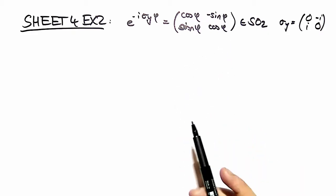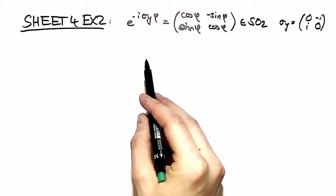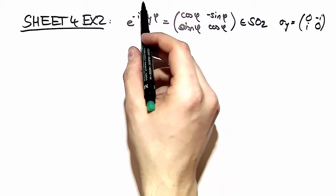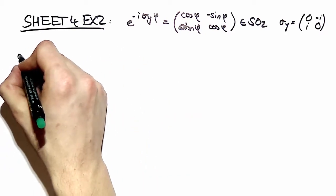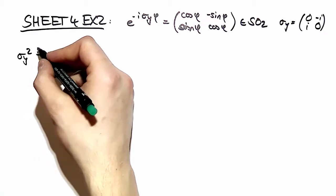We want to do that by Taylor series expanding this exponential, and as you might recall, the Taylor series expansion contains powers of the argument. So we want to calculate powers of sigma y and we start by the power of two.